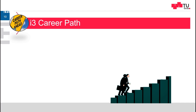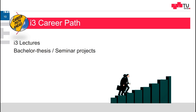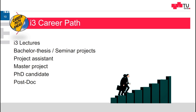An additional benefit is the career path within our I3 team. First you start with lectures, see how we work, and determine if you fit our team. Then you might go for a bachelor thesis or seminar projects with us, or join our research team as a project assistant supporting R&D projects. You might pursue a master thesis with a specific engineering and scientific task to gain your master's degree, or follow the path towards a PhD candidate or postdoc in our research team.